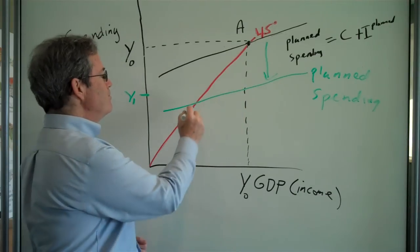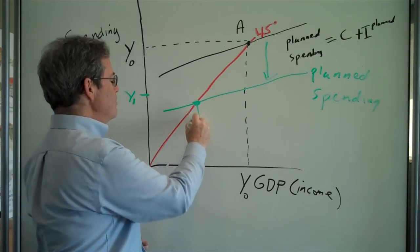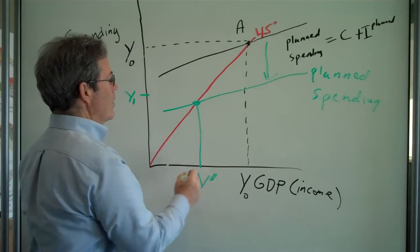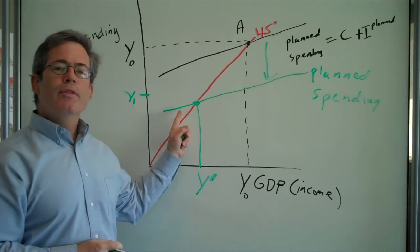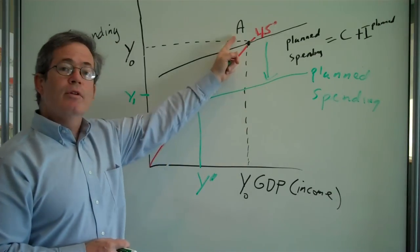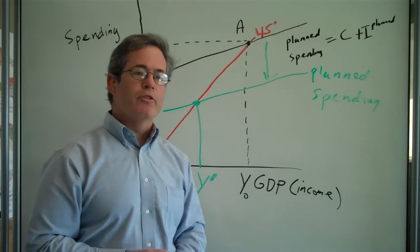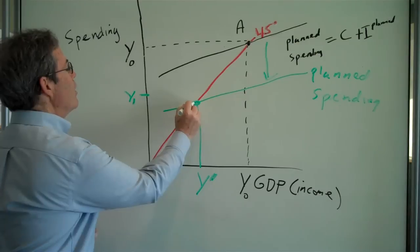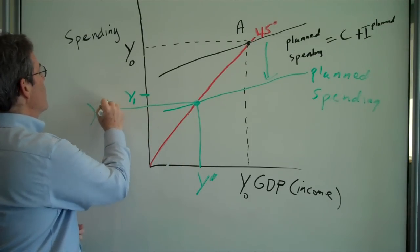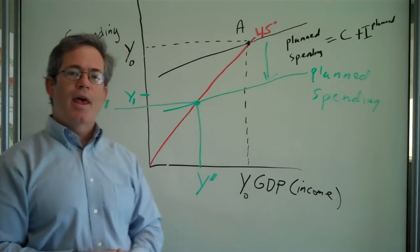How far will it move down? Well, income will decline all the way down to the new equilibrium, where the planned spending curve meets the 45-degree line, where planned spending equals actual spending. So the economy will move down all the way here to Y prime, Y dash.